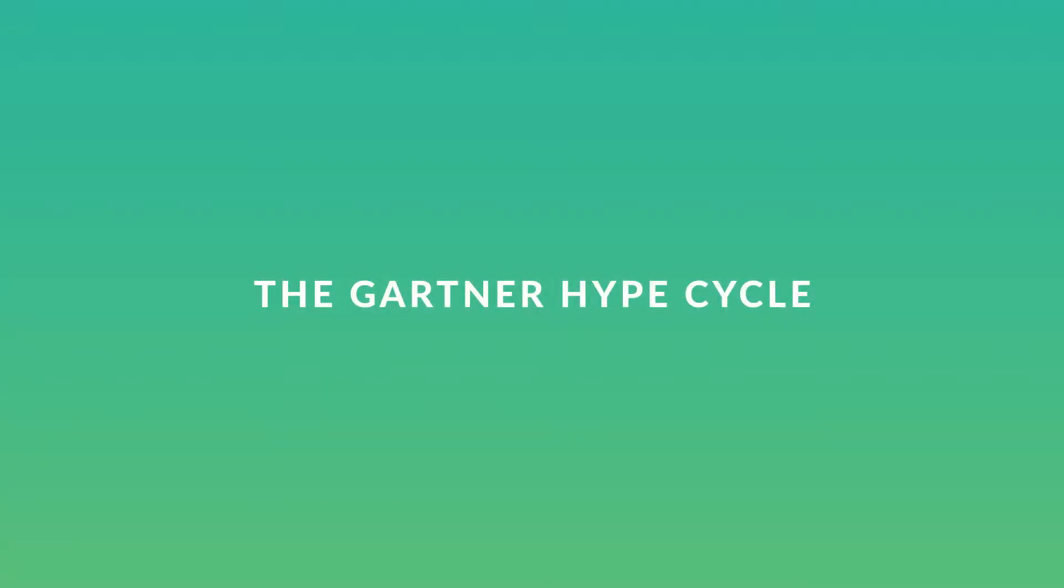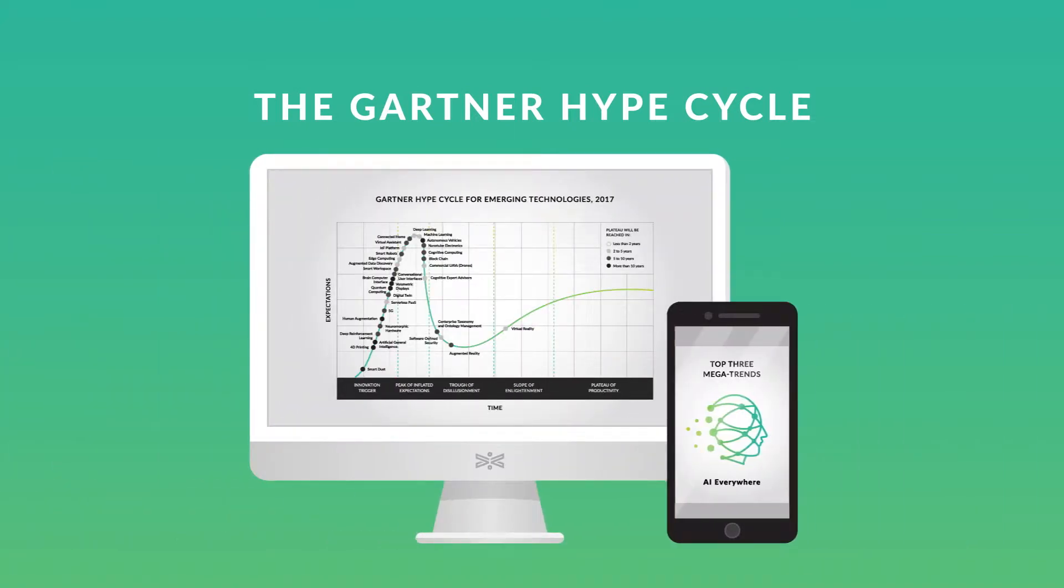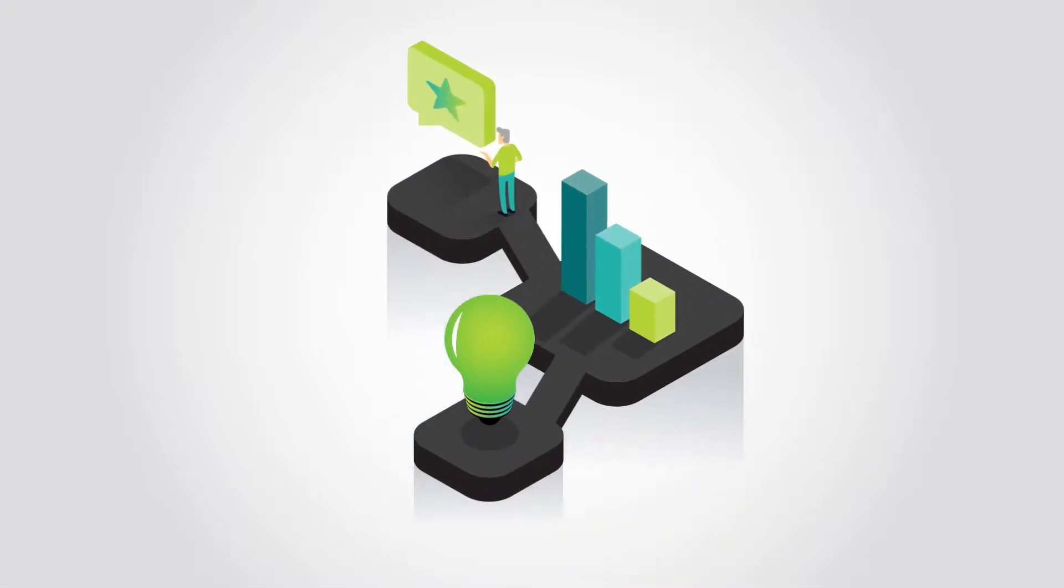The Gartner Hype Cycle is one tool that can help. It's published annually, and the latest version focuses on AI as one of the top three megatrends in emerging technology. The model is a graphical representation of the stages a technology goes through, from conception to maturity to widespread adoption.